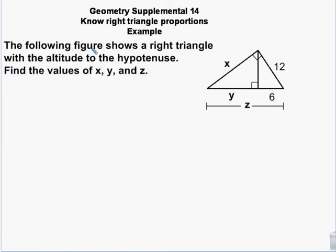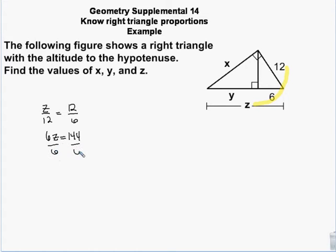So now let's solve some of these. I have the short segment here, the leg, and the hypotenuse — I know these three go together. So once I find Z, I know that 12 is the geometric mean between Z and 6. So I'll have Z over 12 equals 12 over 6. So 6Z equals 144. Divide both sides by 6, and Z is 24.